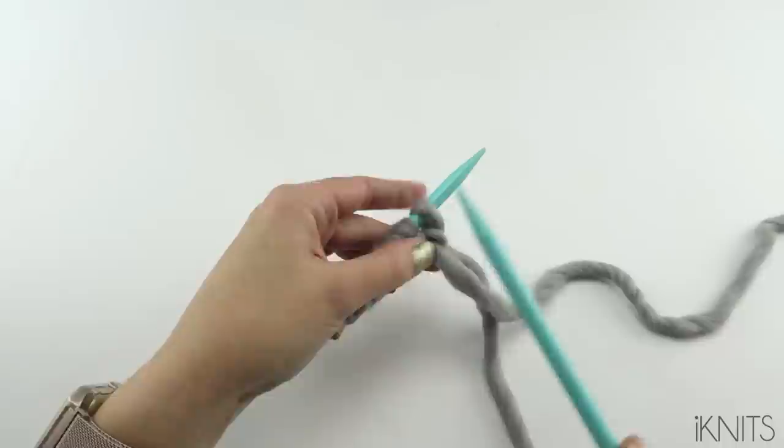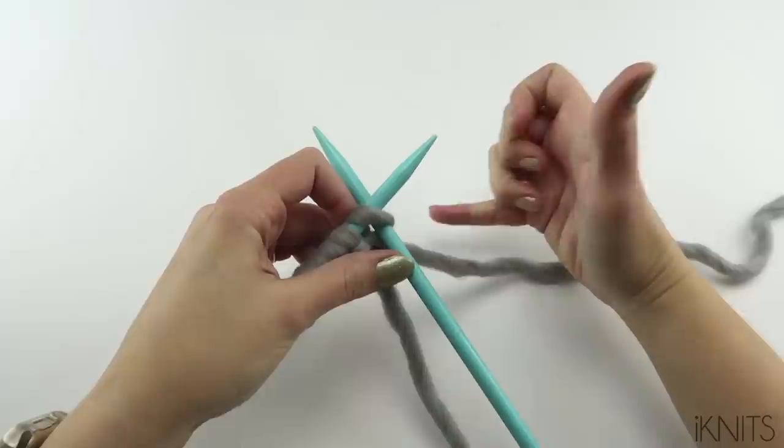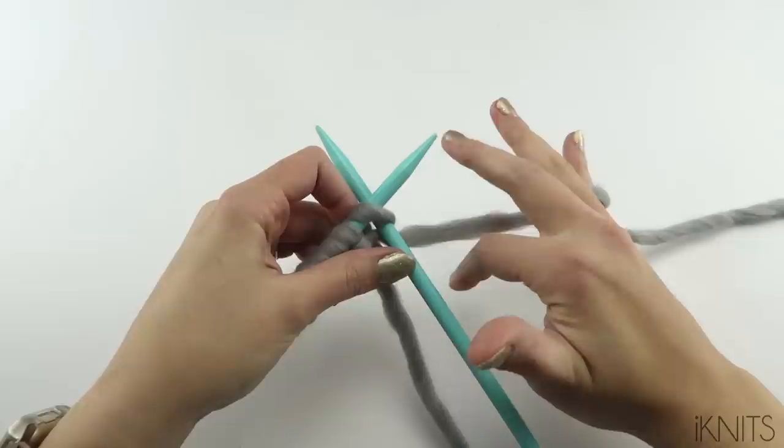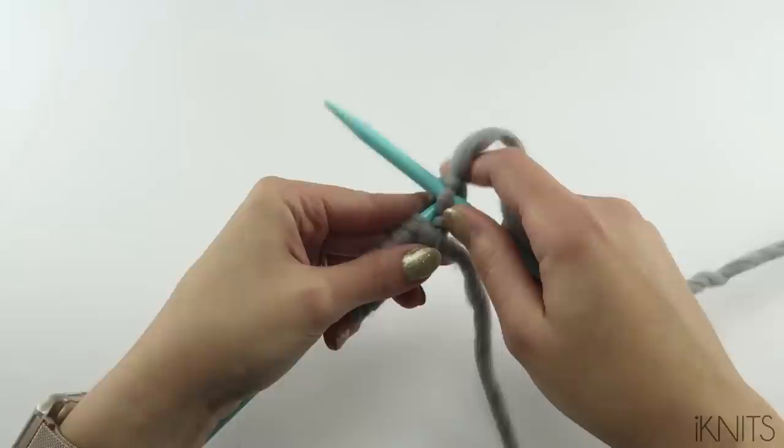With your other needle you're going to go from the front to the back. And then with your working yarn, this is how I hold my yarn. I just kind of twist it on my pinky. And then I have it on top of my pointer finger. And then I bring the yarn around. And then you slide it off.